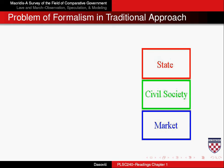A way to understand what that means is to look at this little graphic on the screen. What we have is a way of conceptualizing society as a whole. You have three components of society. You have the state, which essentially is all the stuff that is formally political, like governments, bureaucracies, etc.